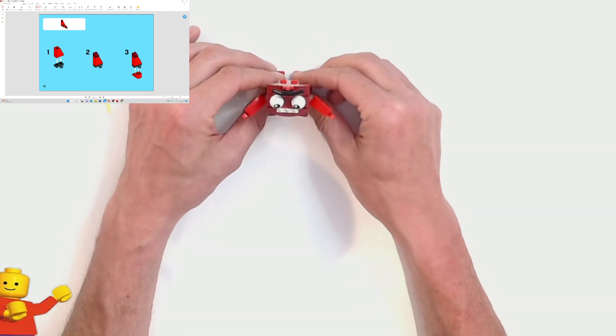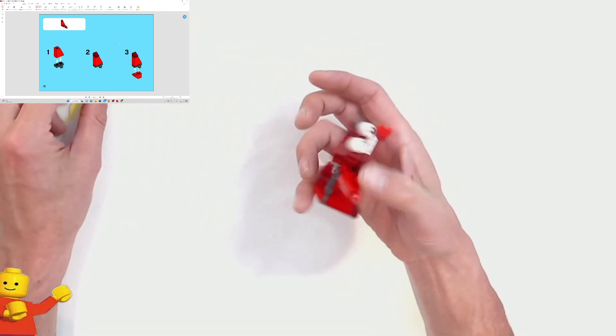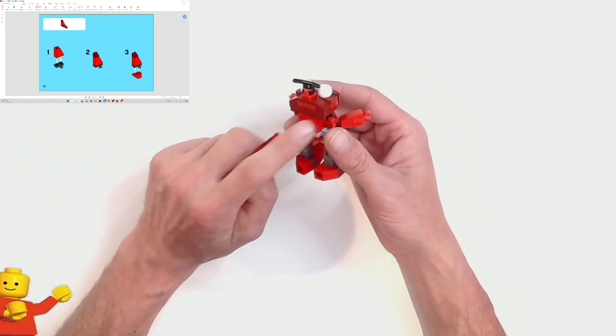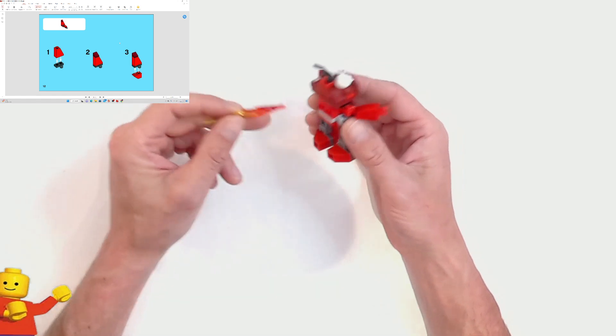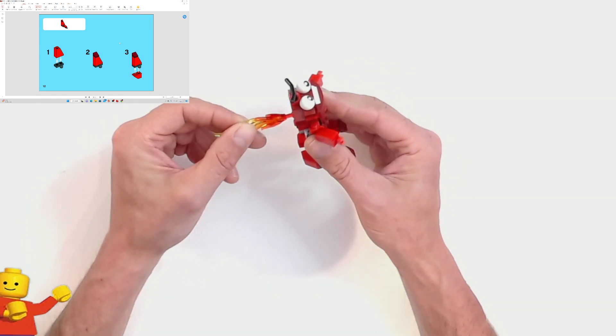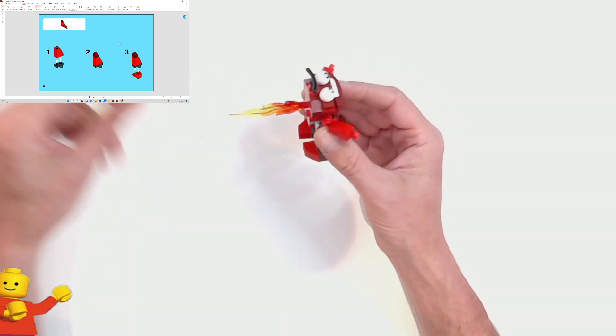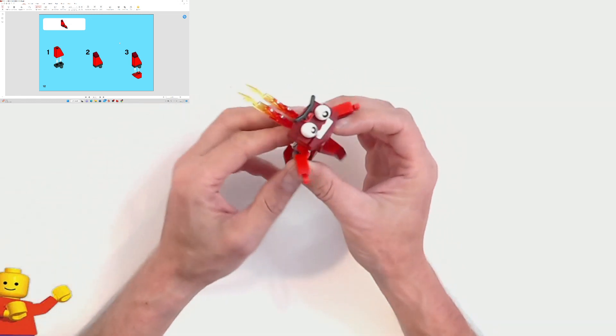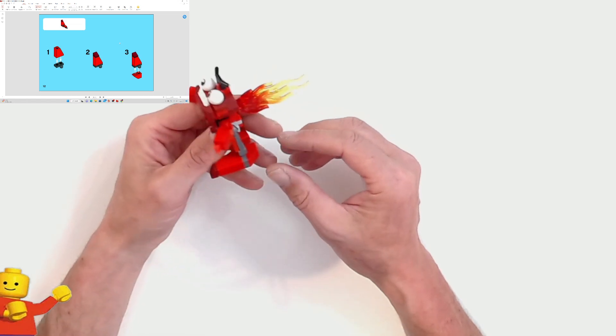And then last but not least. The last two elements are going to go into the two holes here. Of the brick that we put in much much earlier. And you go put the flame elements. In the back. These are so cool. And there you go. Now we have Zorch.